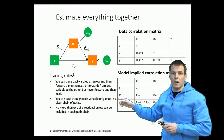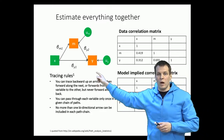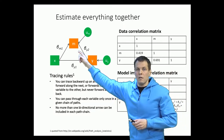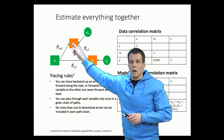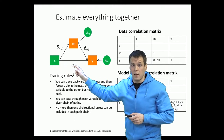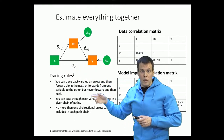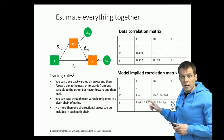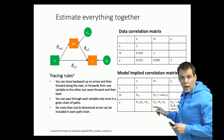Similarly, we can calculate the correlation between y and m. It is the direct path plus the spurious correlation due to x, which is a common cause for both. That gives us the correlation between m and y.